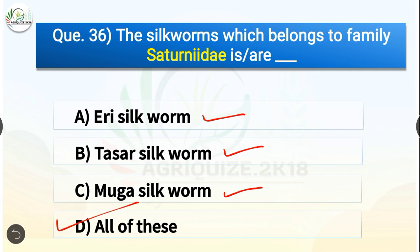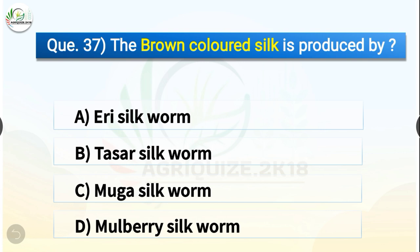Question number thirty-seven: The brown coloured silk is produced by dash. The options are eri silkworm, tassar silkworm, muga silkworm, or mulberry silkworm. The correct answer is option B — tassar silkworm. Brown coloured silk is produced by tassar silkworm, whereas muga silkworm produces golden yellow coloured silk.